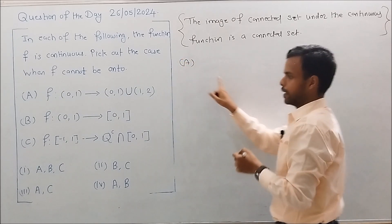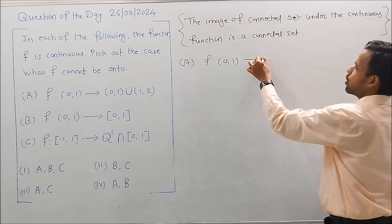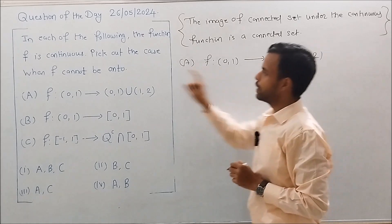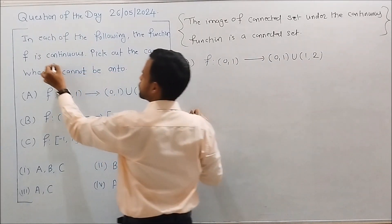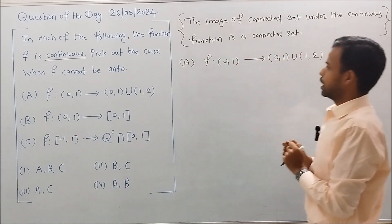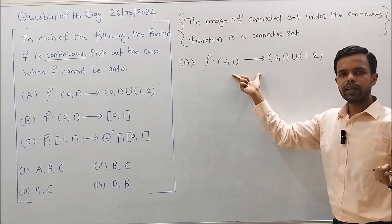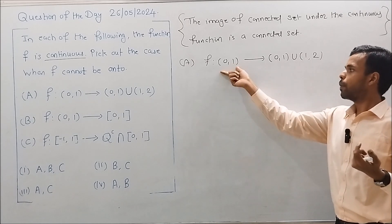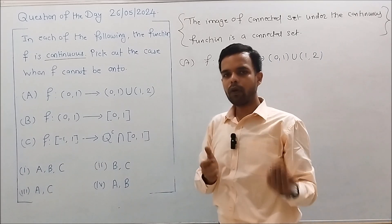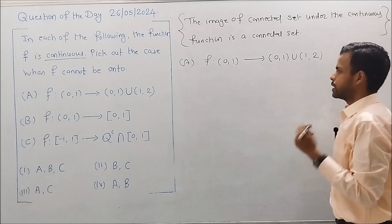Case A: the mapping is defined as f from the open interval (0,1) to the union of open intervals (0,1) and (1,2). It is already given that f is a continuous map. We have to check whether this mapping cannot be onto, or whether there may exist some onto mapping from (0,1) to this set.